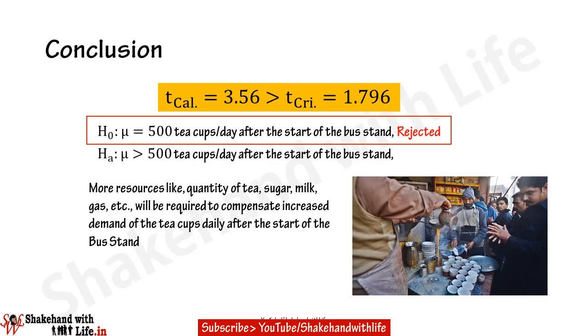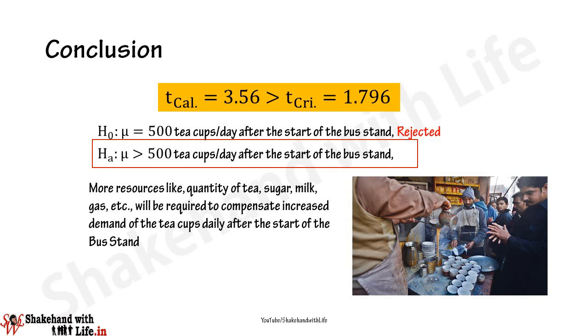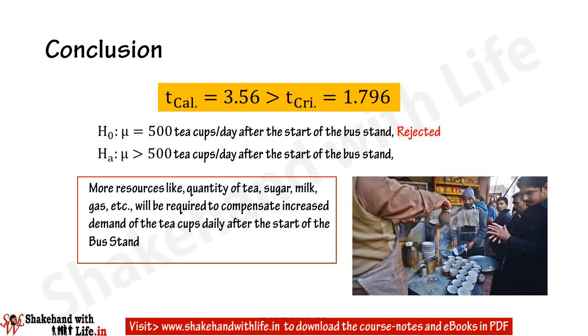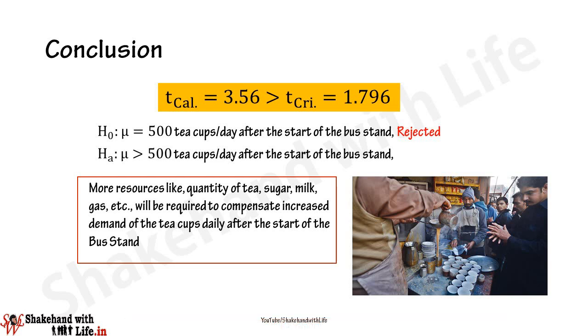Therefore, from the T-test, the calculated t value is greater than the critical t at alpha 5% for 11 degrees of freedom. The null hypothesis — H-naught: mu equals 500 tea cups per day, implying sales will continue at 500 after the bus stand starts — is rejected. This implies average sales will increase from 500 tea cups per day, and the restaurant will need to arrange additional resources like tea, milk, sugar, and gas to meet the increased demand.